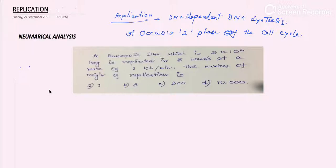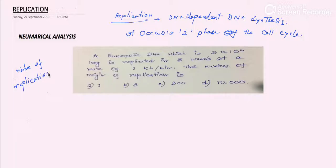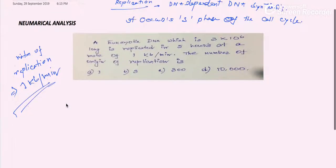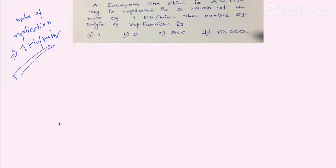Before we start the numerical analysis, let's read the problem. A eukaryotic DNA which is 3×10⁶ kb long is replicated in five hours at the rate of one kb per minute. The question asks us to find the number of origins of replication.